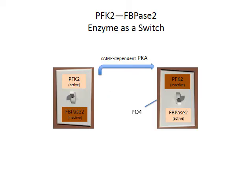PKA will effectively change the orientation of this bifunctional enzyme so that we're in the PO4 orientation and FBPase-2 is active. To flip the switch back the other way, we use phosphoprotein phosphatase, or PP1, which removes the PO4 group and restores the OH orientation.